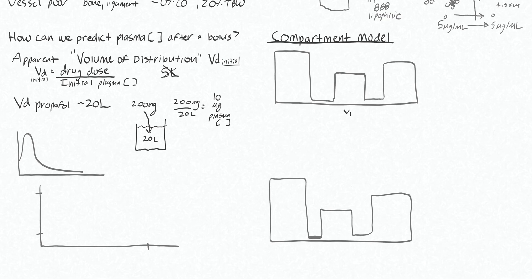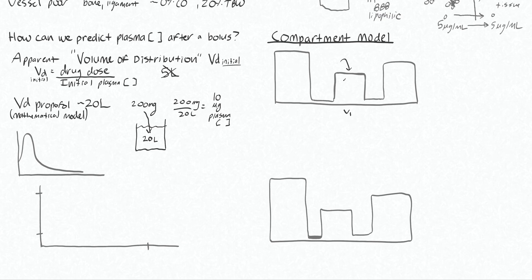The concept of volume of distribution is a mathematical model which does not actually attempt to describe what those 20 liters are. It doesn't tell you whether it's plasma, lung, liver, or heart volume — it just tells you that it looks like the drug has gone into a compartment that is 20 liters. This leads us into the compartment model. V1 is that first compartment — we give our bolus and it goes into this theoretical compartment of 20 liters.